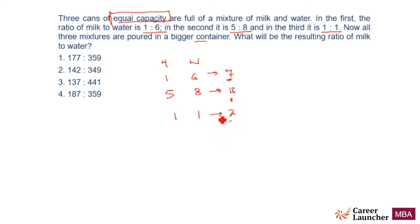So what is LCM of 13, 7, and 2? 13, 7, and 2 are prime numbers. So the LCM will be the product of the 3: 13, 7, and 91 into 2 is 182. So I am assuming it is 182 liters in each of the 3.